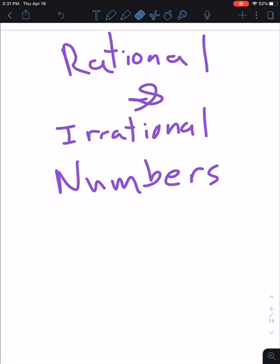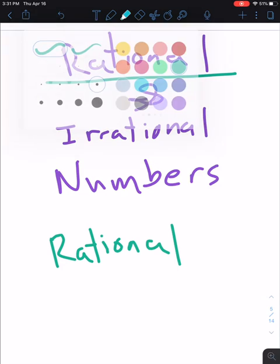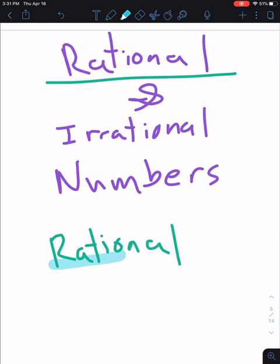All right, now, these are two different categories that all known numbers fit into. So before we talk about what these are, let's look at these words, rational and irrational. So if I write out rational, a rational number, let's take a peek at this key part of rational. So we've got inside the word rational, we've got the word ratio.